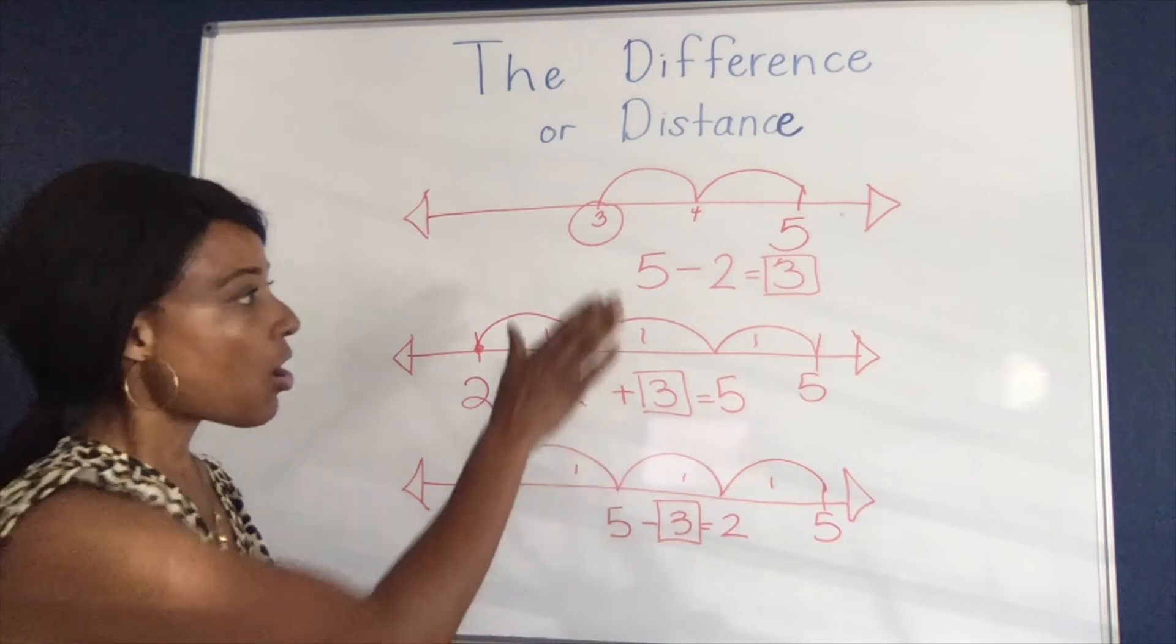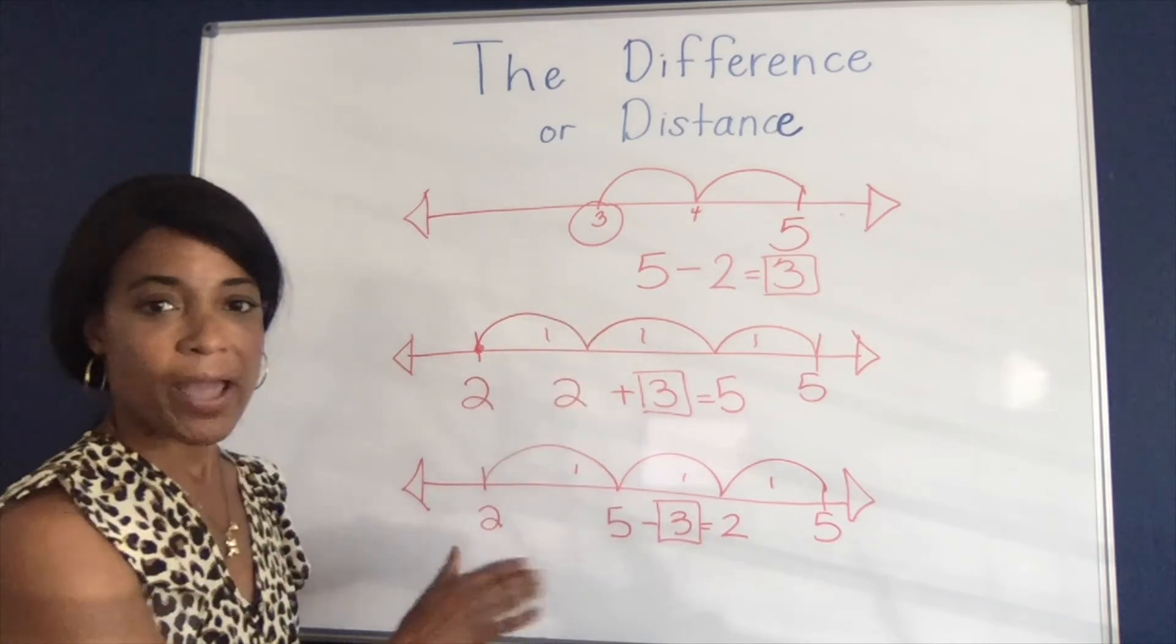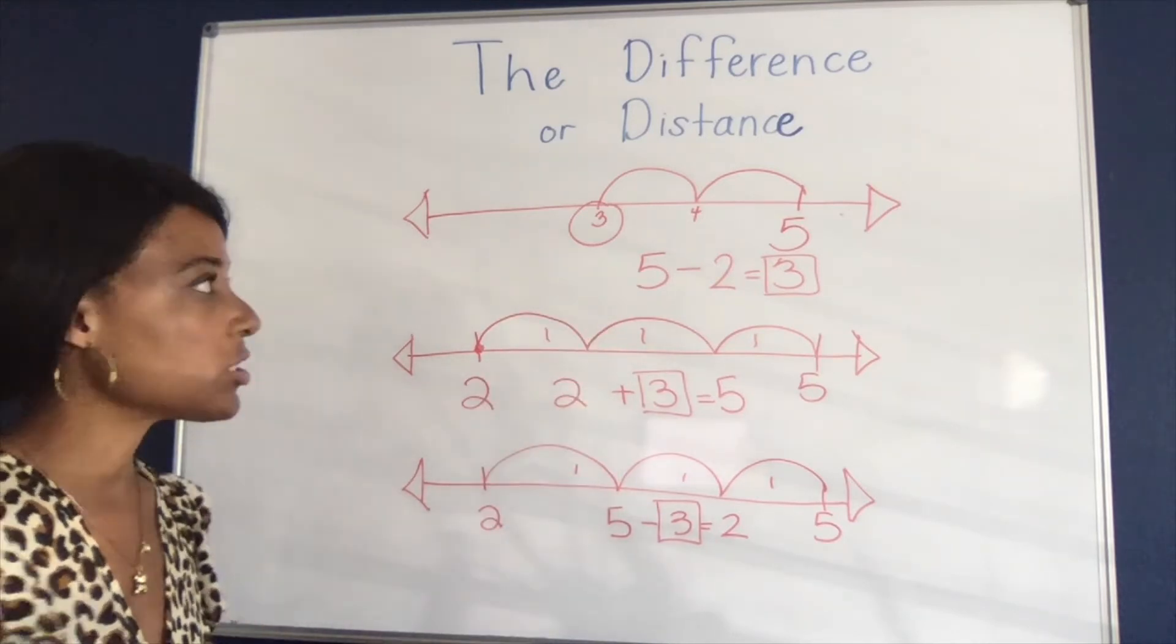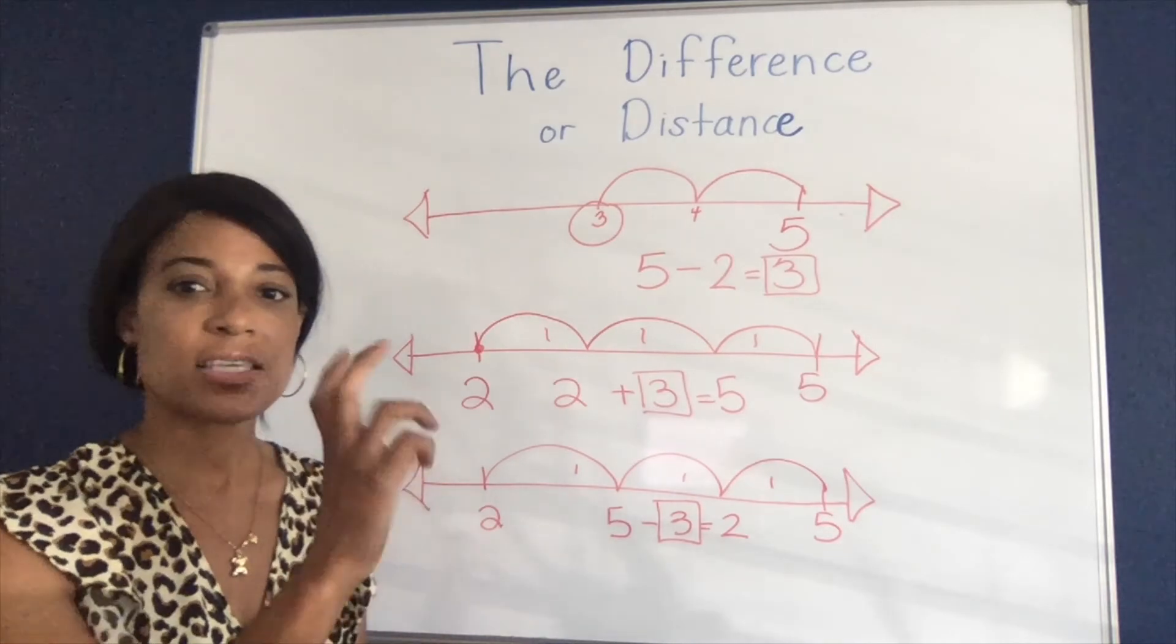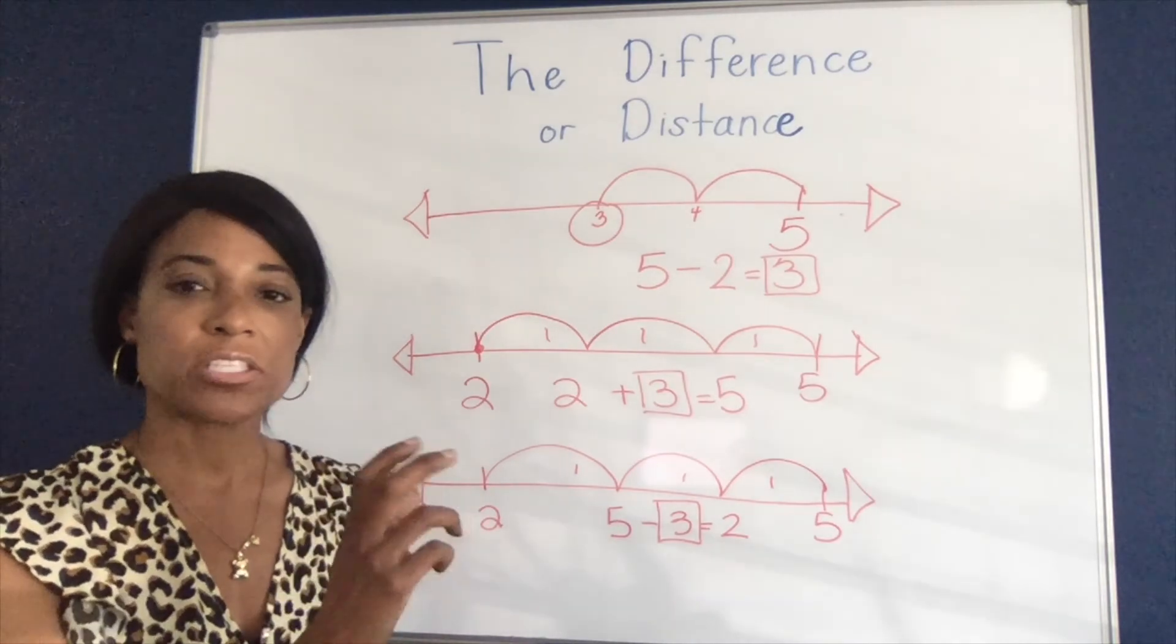But you'll notice that in all of these different formats, all of these different equations, all of these different number lines, the difference is always three.